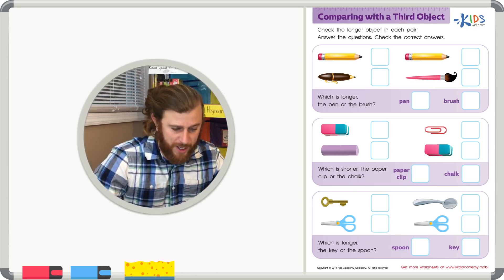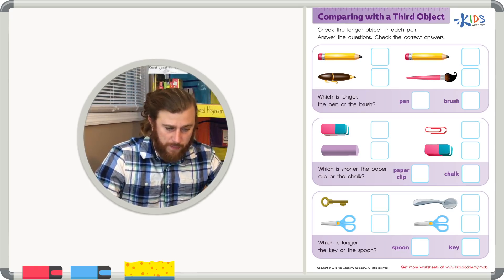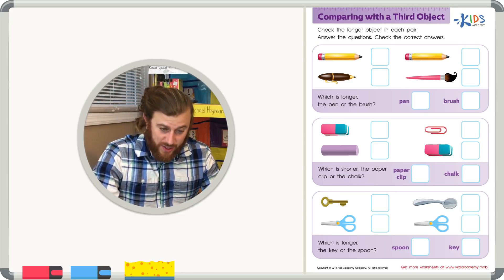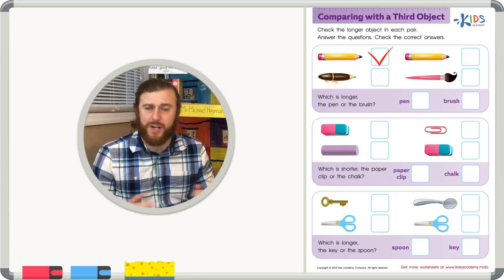So, let's look at our first objects. We have a pen and a pencil. Which one's longer? Well, it's pretty easy to tell the pencil is longer. So let's go ahead and check the pencil.